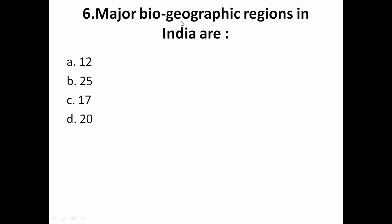The next question is: how many major biogeographic regions are in India? The answer is 12. There are 12 major biogeographic regions in India. This is the correct answer.